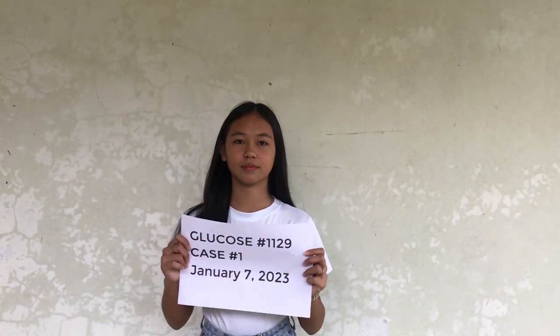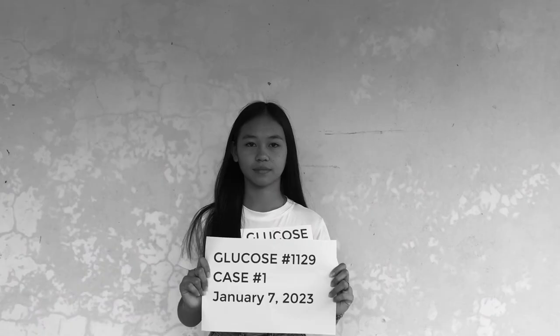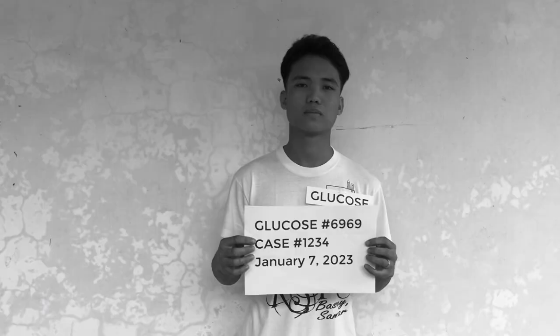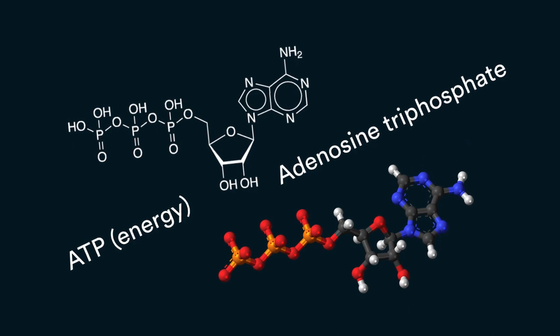Glucose or blood sugar is the main type of sugar in the blood, and it is the major source of energy for the body cells. Atong itipi-itipi na to pa grade 9?